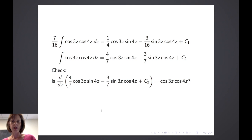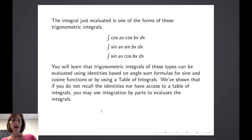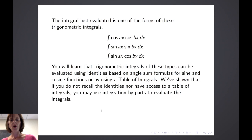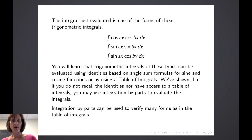We can check that the derivative of our anti-derivative equals cosine of 3z times cosine of 4z, and you can verify that it is. The integral we just evaluated is one of the forms of trigonometric integrals — the integral of cosine of ax times cosine of bx dx, or forms involving sine of ax sine of bx, or a combination of sine and cosine. These types can also be evaluated using identities based on angle sum formulas or a table of integrals. We've shown that if you don't recall the identities or have a table, you may use integration by parts.